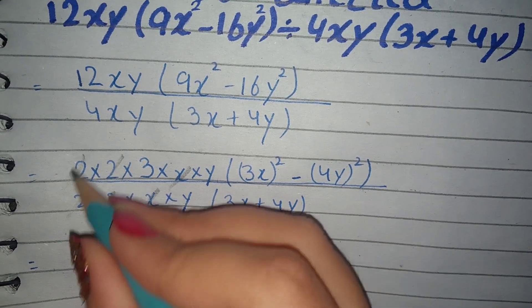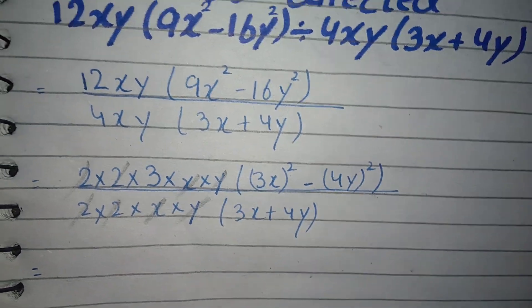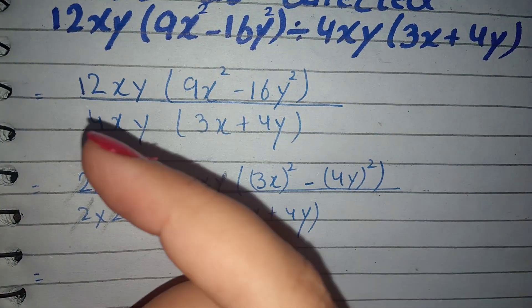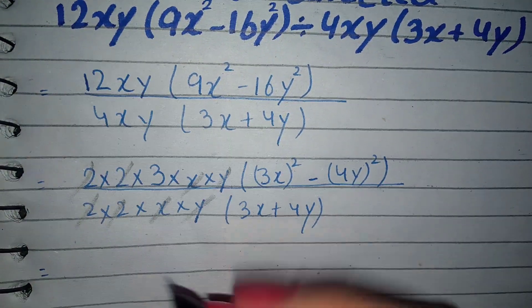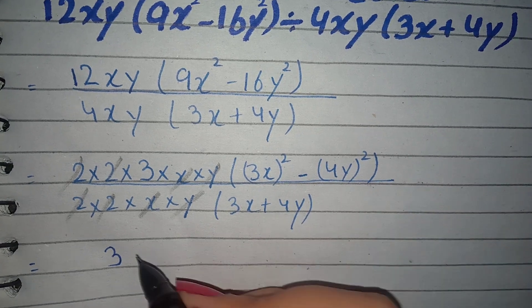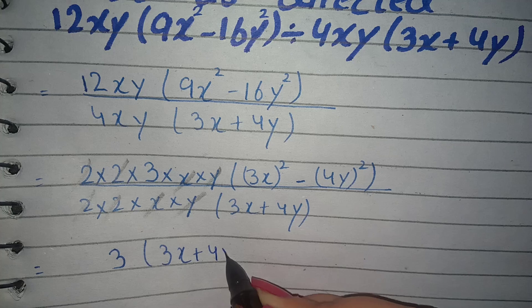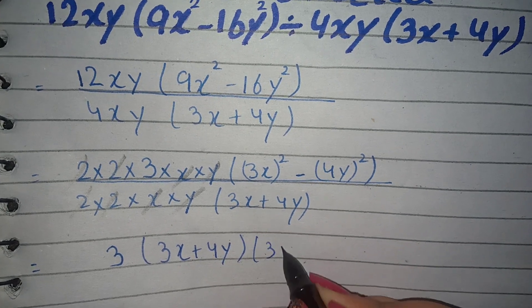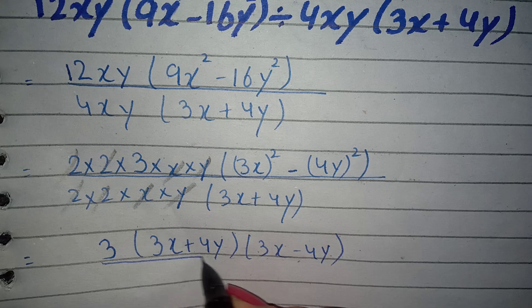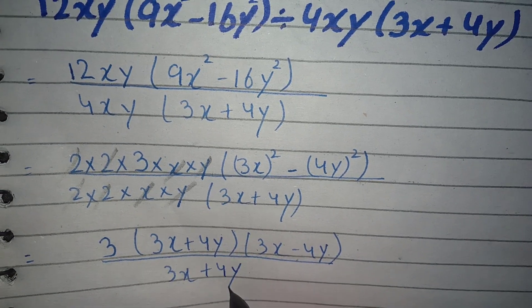2 cancel 2, 2 cancel 2, y cancel. So this we will write as 3 times 3x plus 4y, and 1 times 3x minus 4y. I will write here 3x plus 4y.